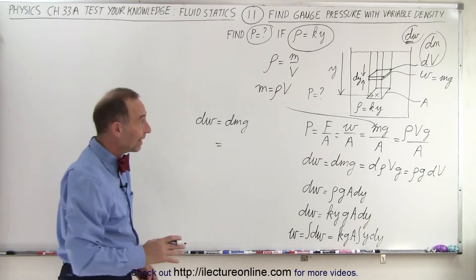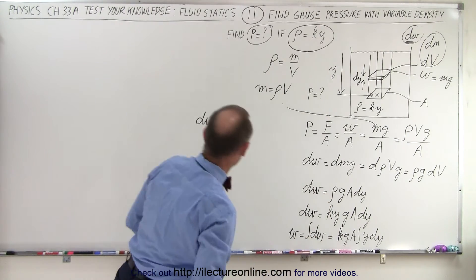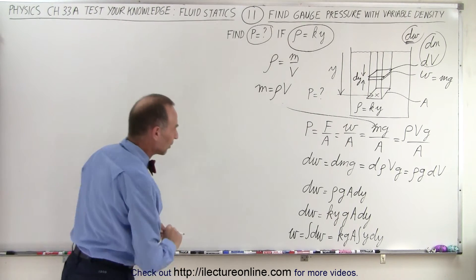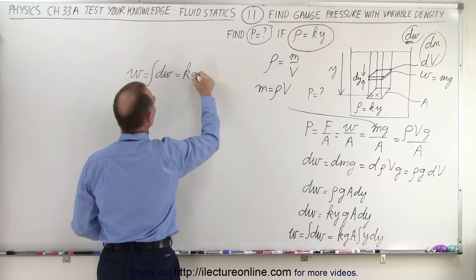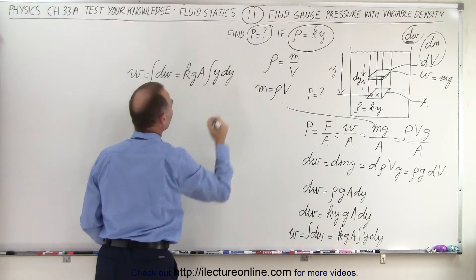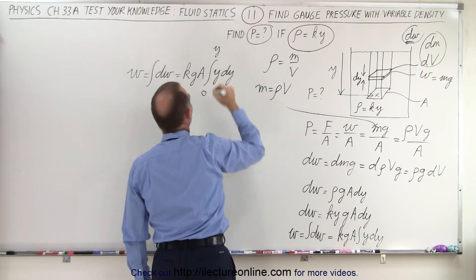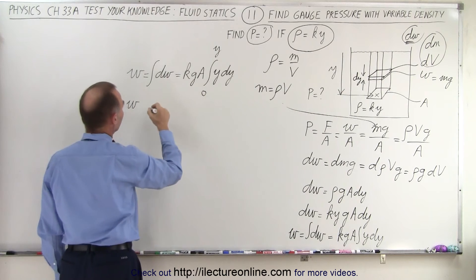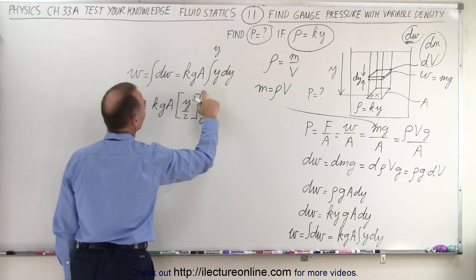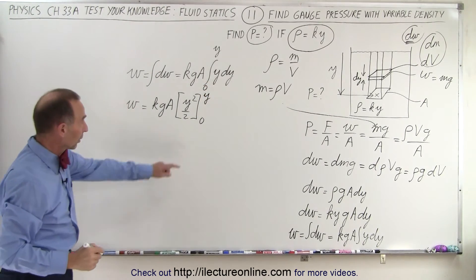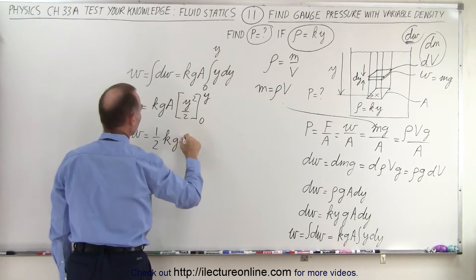We have a way of finding the weight of this column by integrating. So W equals k·g·A times the integral from 0 to y of y dy. Integrating y gives y²/2, evaluated from 0 to y. Plugging in the lower limit gives zero; plugging in the upper limit gives y². So the weight equals one half k·g·A·y².